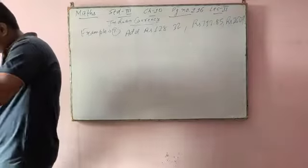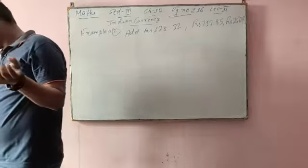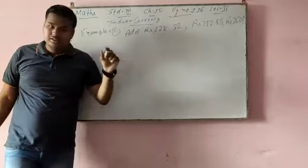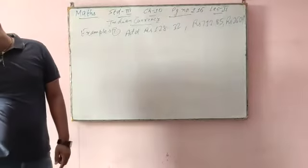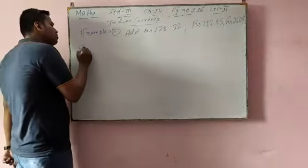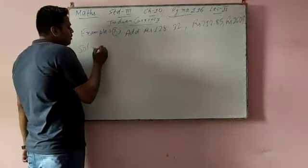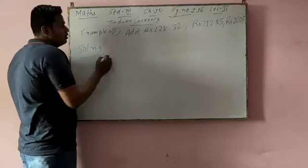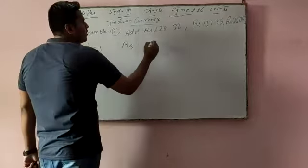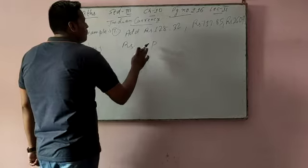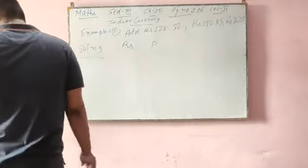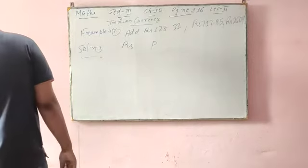Whatever I will explain in this example number 7 here, it will be a little different. You can solve it that way also. Rs. will be there and Rs. will be there. But here it is already written in decimal form, so you can write it in decimal form also.